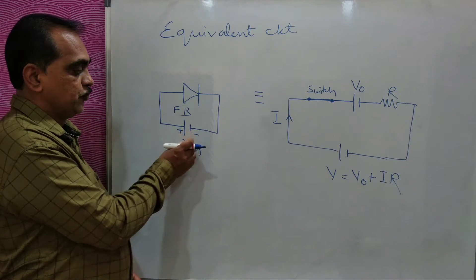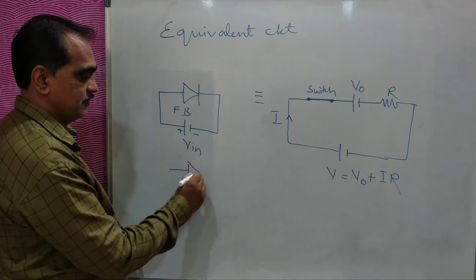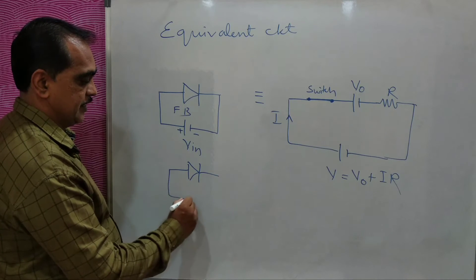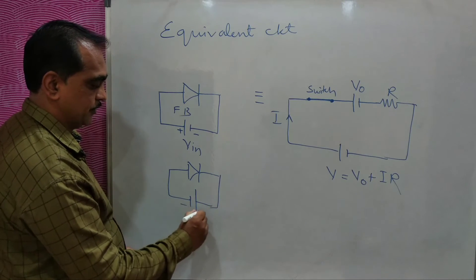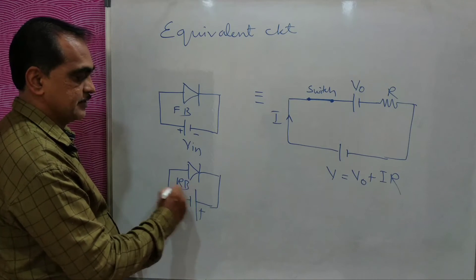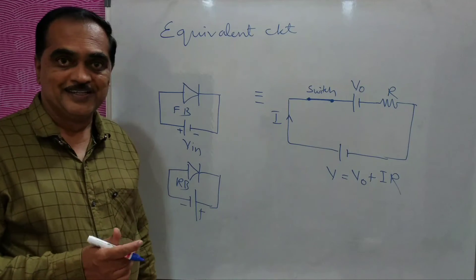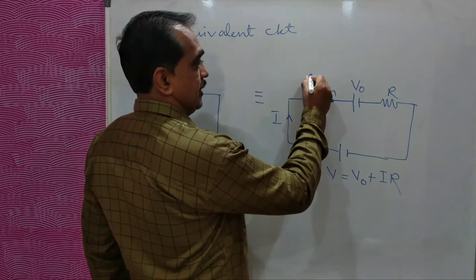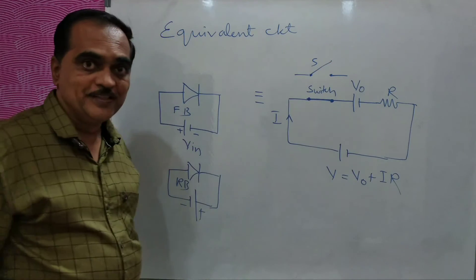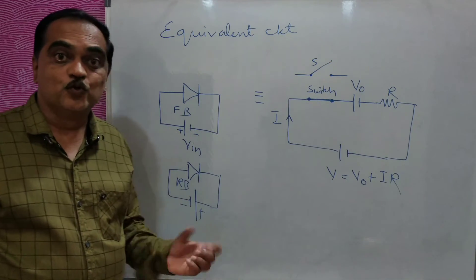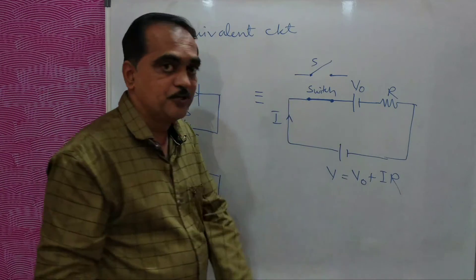Similarly, if the applied voltage becomes opposite — say this is the diode and negative is connected to anode and positive is connected to cathode — then it is reverse biased. In reverse bias case, there will be no forward current. In that case, we can show this switch as an open switch. The diode is open. This is the equivalent circuit of your semiconductor diode.